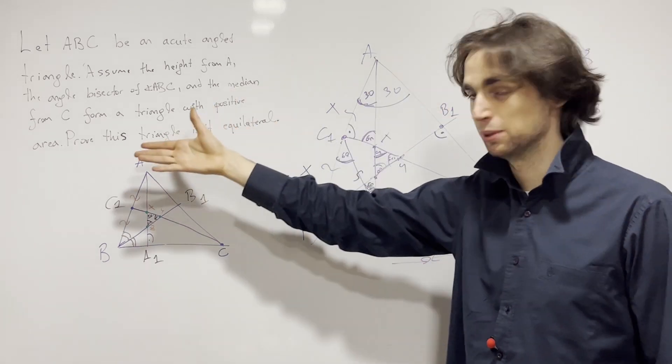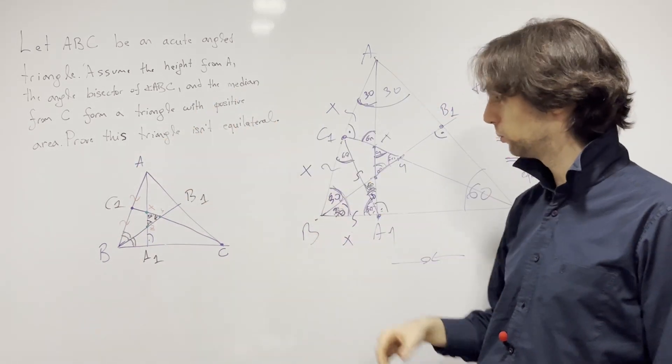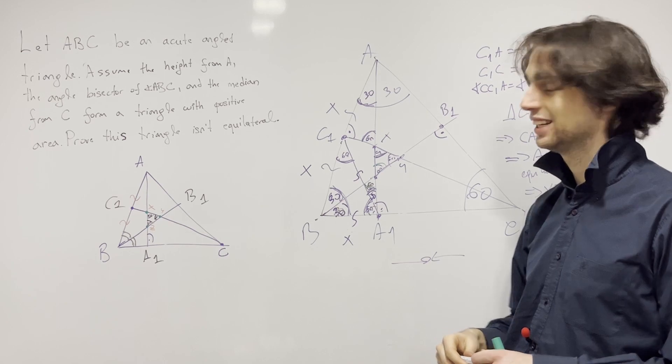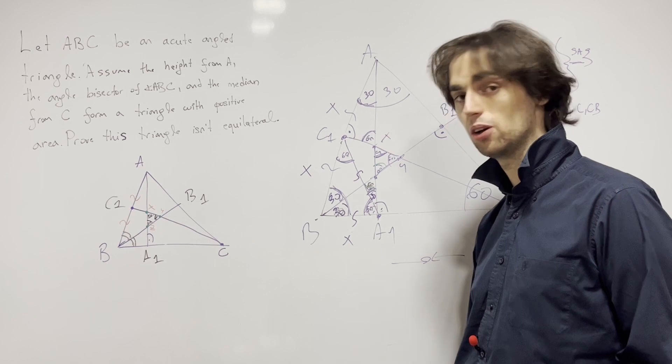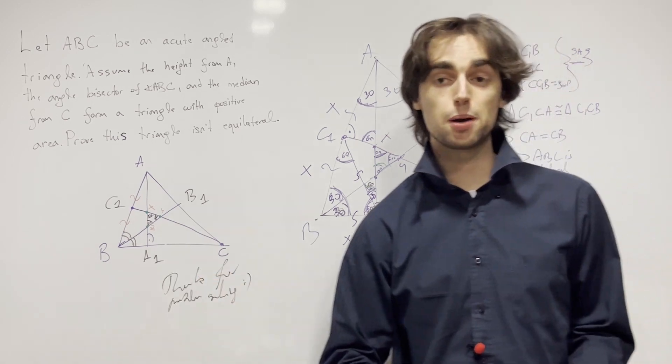And so the opposite of it is true, which is that XYZ cannot be equilateral. Now this finishes up our problem and as always, thanks for problem solving.